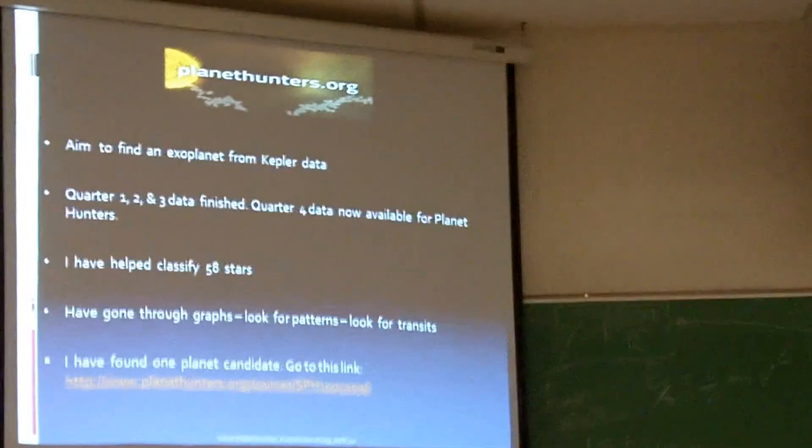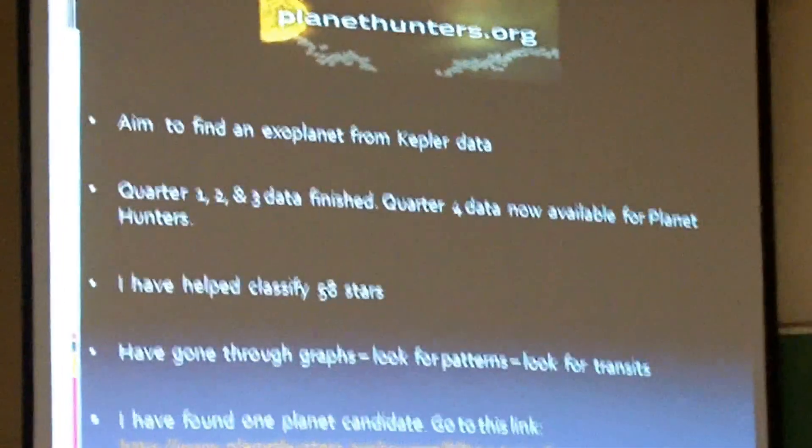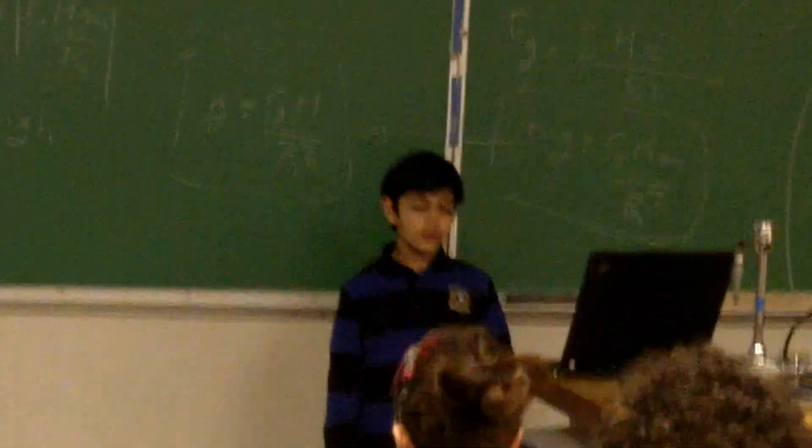Planet Hunters is where we look for exoplanets. Exoplanets are planets that orbit other stars. The data comes from NASA's Kepler, and its mission is to help find Earth-like inhabitable planets that might have life on them. I have helped classify 58 stars and I've also found one planet candidate.